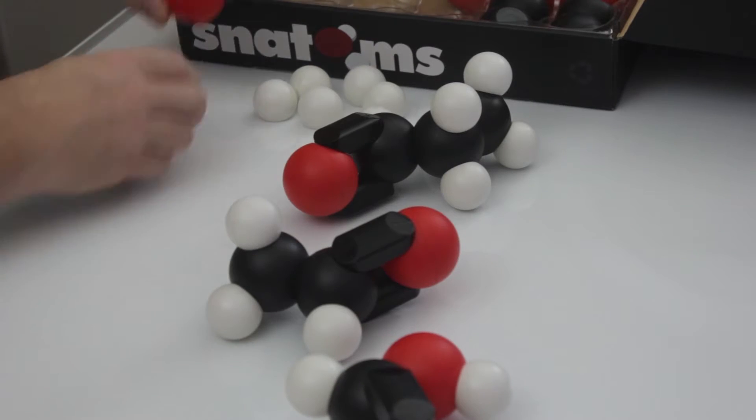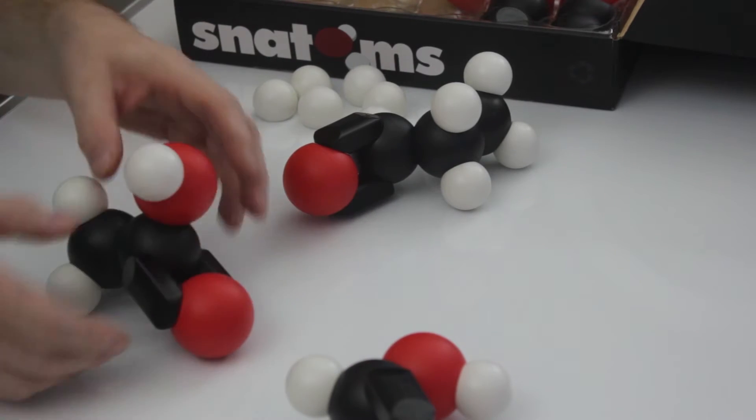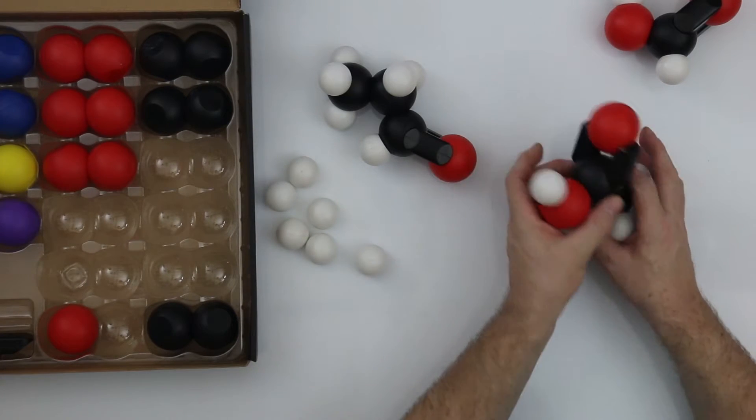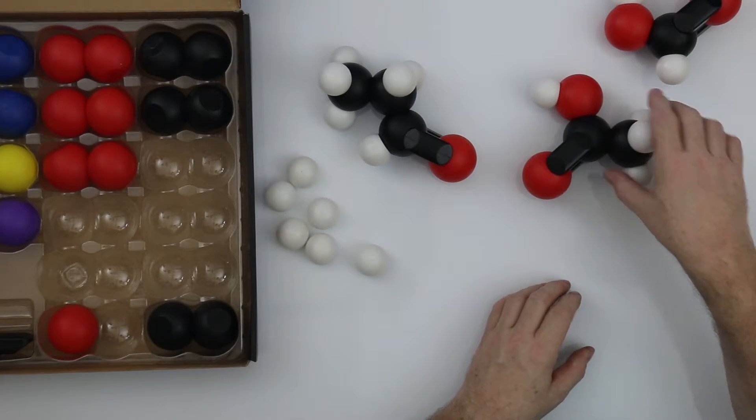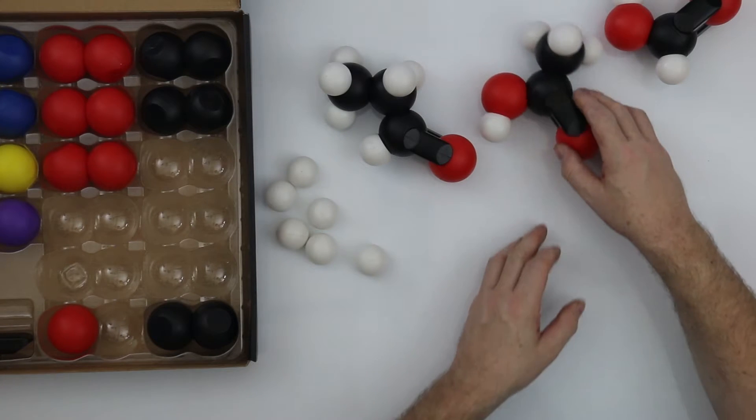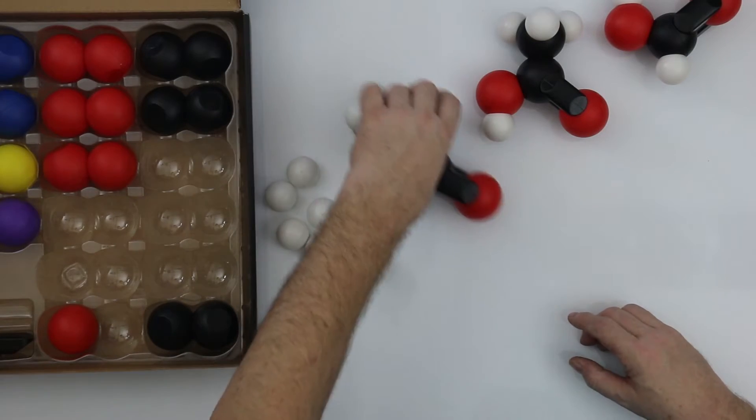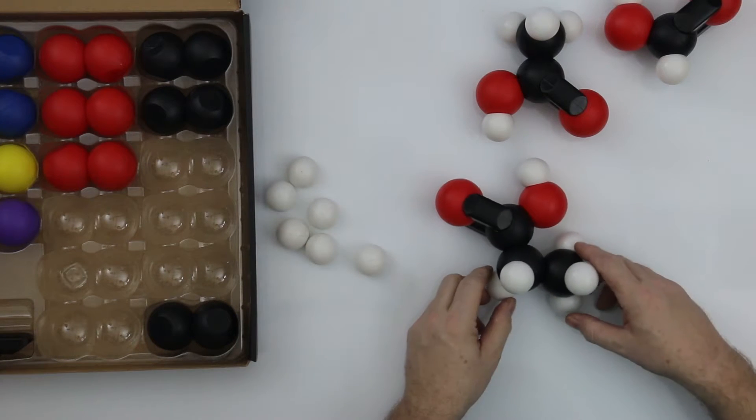We can do the same with the ethanol and replace one of the hydrogens with the alcohol group OH. And this makes ethanoic acid. Ethanoic acid, otherwise known as acetic acid. Or more commonly, vinegar. With the propanol we can oxidize that by putting an oxygen group with a hydrogen on there. And we've now made propanoic acid.